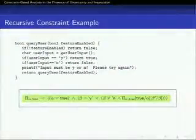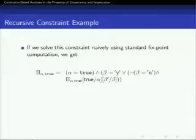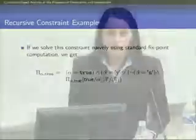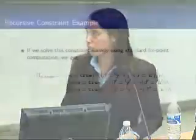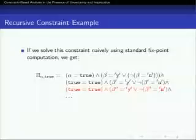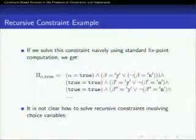This constraint characterizes the exact condition under which query_user will return true. However, the constraint is recursive — not surprising given that query_user is a recursive function. For this constraint to be useful so that we can issue satisfiability and validity queries, we have to solve it and bring it to closed form. If we try to solve this naively using a standard fixed-point computation, we end up introducing an unbounded number of choice variables — beta, beta prime, beta double prime, and so on — and this fixed-point computation won't terminate. The lesson is that when we have recursive constraints containing choice variables, it's not immediately clear how to solve them.